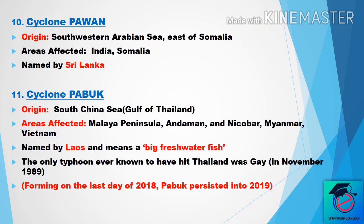The tenth cyclone originated from the southwestern Arabian Sea, east of Somalia. Areas affected are India and Somalia. The name was suggested by Sri Lanka.